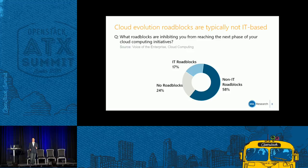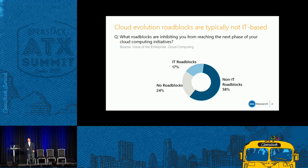58% of the reasons why an enterprise can't get to the next phase — say, from virtualization to automation or private cloud — are things like fear, uncertainty and doubt, budget, prioritization, lack of skill set, and org design. They just aren't equipped to support a cloud initiative. So for service providers in the room, helping that enterprise on that journey also includes org structure and skill set development.